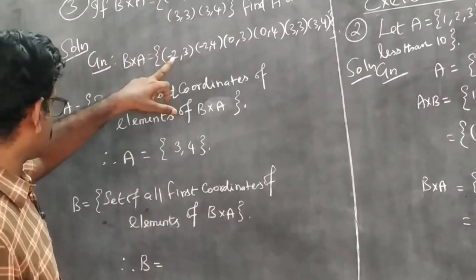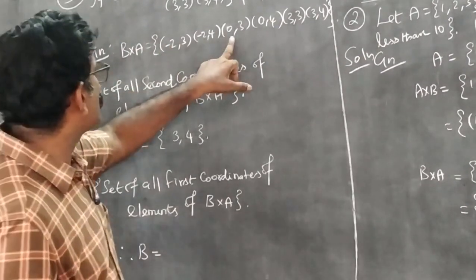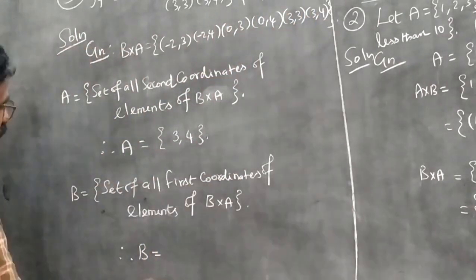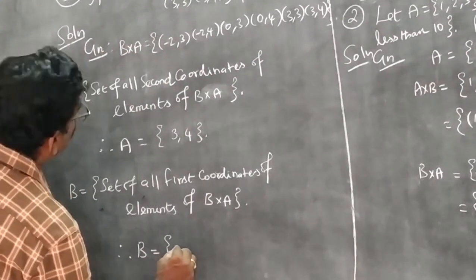First coordinate is -2, here is -2, 0, 0, 3, 3. So here is the set of all first coordinates of elements of B×A. So this is the set with repeated elements.